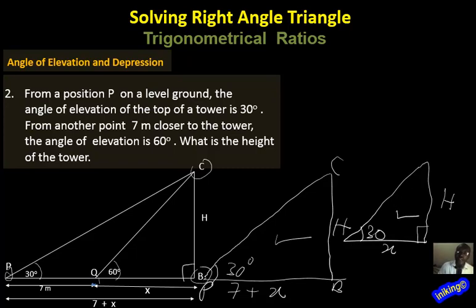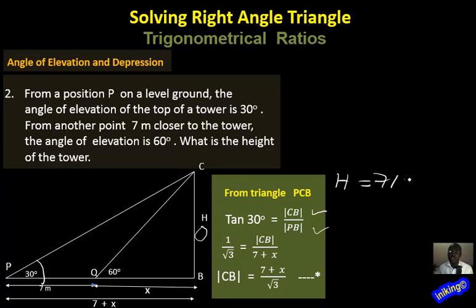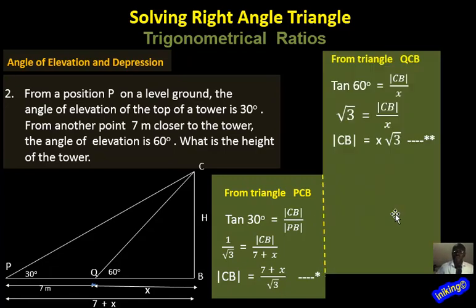From triangle PCB, H is the opposite side and PB = 7 + X is the adjacent. So tan 30 = H / (7 + X). Since tan 30 = 1/√3, rearranging gives H = (7 + X) / √3. That's our first equation. We then look at triangle QCB to obtain a second equation in terms of H.